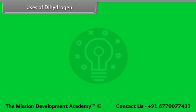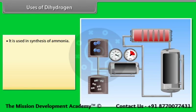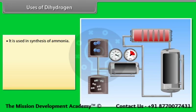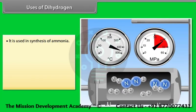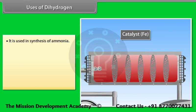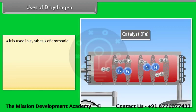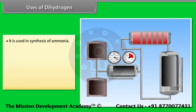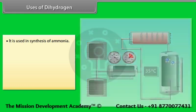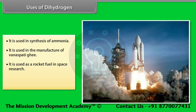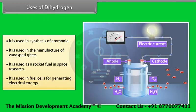Uses of dihydrogen: It is used in the synthesis of ammonia, where nitrogen and hydrogen are heated, compressed, reacted, and the ammonia is cooled and stored while unreacted nitrogen and hydrogen are recycled. It is used in the manufacture of Vanaspati Ghee. It is used as a rocket fuel in space research. It is used in fuel cells for generating electrical energy.